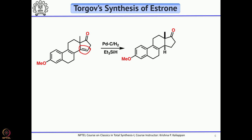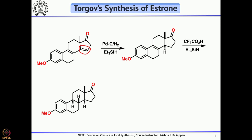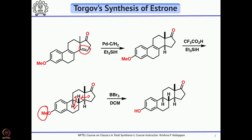These two reductions were done individually. First, the trisubstituted double bond in the five-membered ring was reduced under hydrogenation conditions in the presence of triethylsilane. For the tetrasubstituted double bond, stronger conditions were needed — trifluoroacetic acid and triethylsilane were used to get the corresponding trans-trans ring system. Once you have that, what is left is to cleave the aryl methyl ether, which was done easily by treating with BBr₃ to get estrone. Overall, Targo's total synthesis of estrone is only 6 steps, involving acid-catalyzed cyclization and stereoselective reduction of the diene.